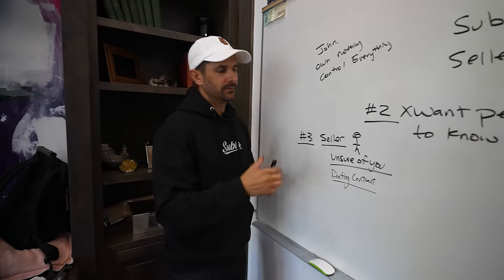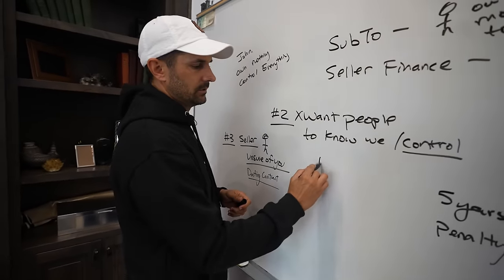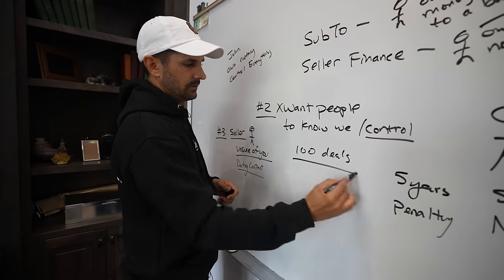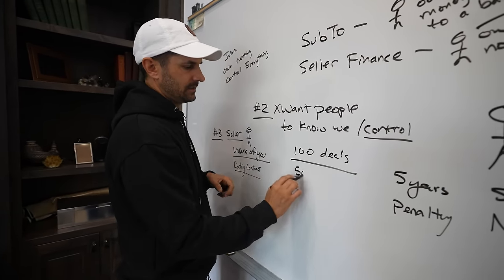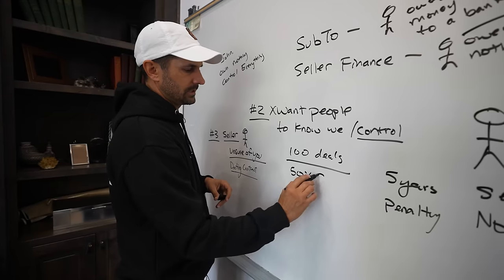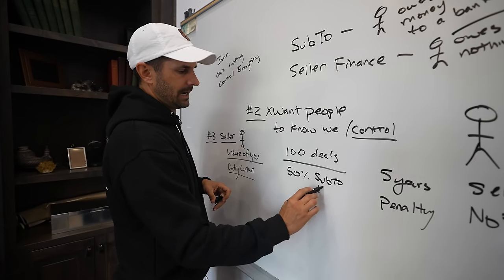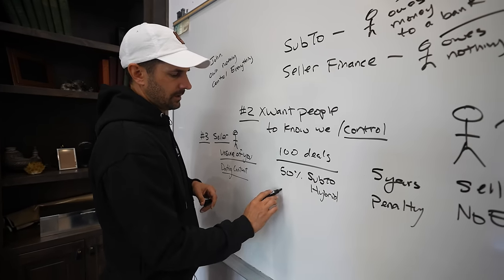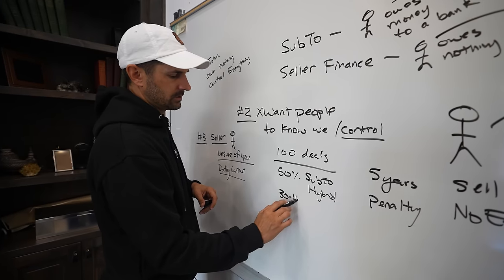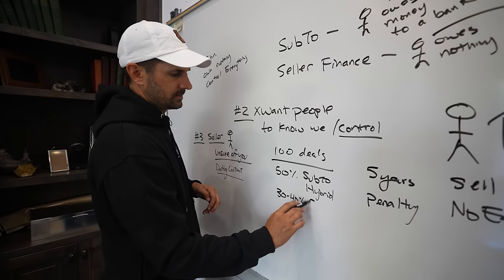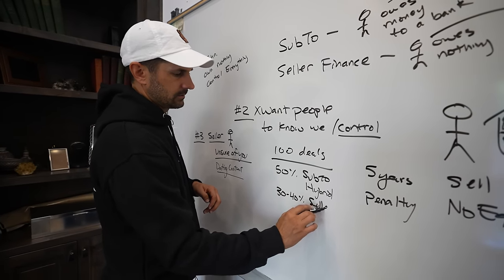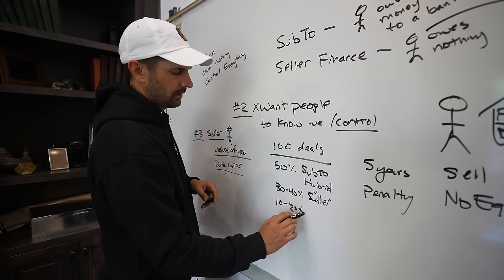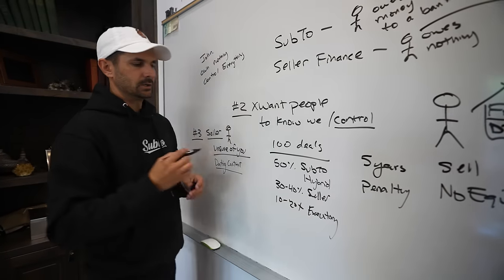Out of a hundred deals with creative finance, I'd probably say about 50% are sub-two or hybrid, about 30 to 40% are seller finance, and a good 10 to 20% are executory contracts.